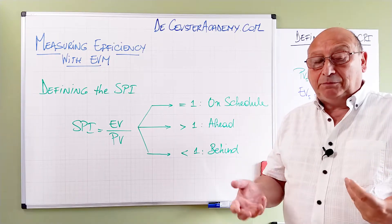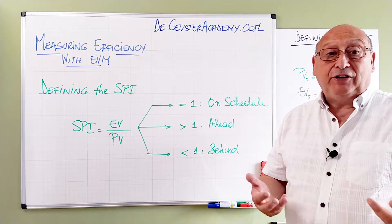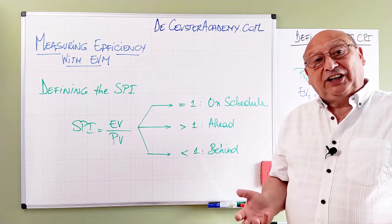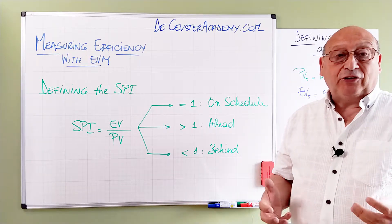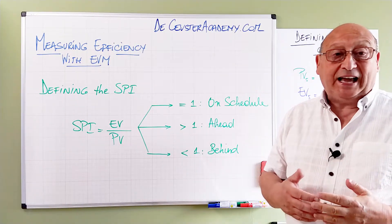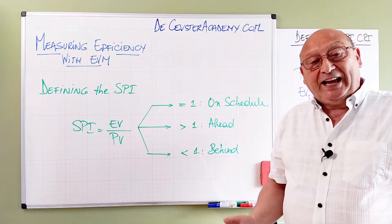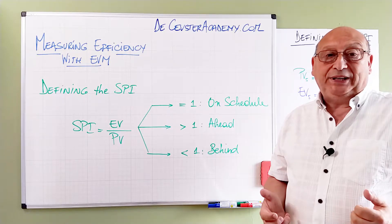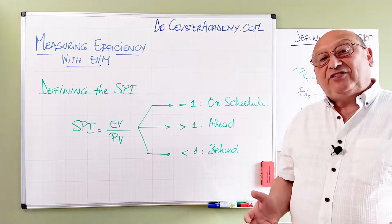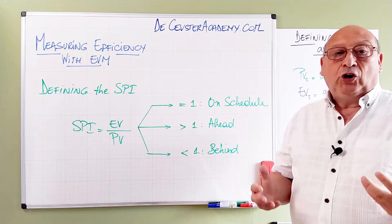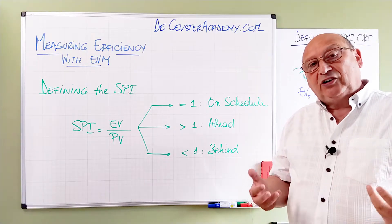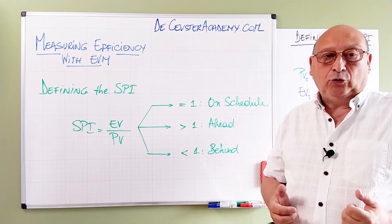When we go faster, it means we are using the funds — we need the money faster and we may run out of budget, even though we are in a good position, and we may be stopped because of budgetary reasons. The last case, smaller than one, means we are creating the deliverables slower than expected, which means the earned value is smaller than the planned value. The SPI becomes smaller than one, which is an indication that we are behind schedule.